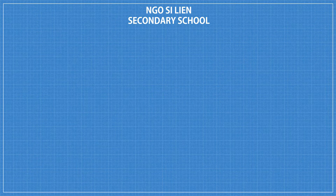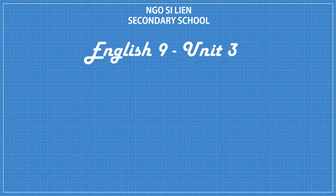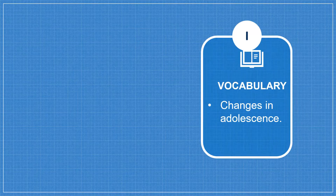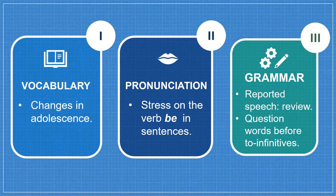Hello everybody. I'm a teacher from Ngo Xilin Secondary School. Today I will introduce you to English language Unit 3: Stress and Pressure. In this lesson we have three main parts: Part 1 — Vocabulary: changes in adolescence; Part 2 — Pronunciation: stress on the verb 'be' in sentences; and Part 3 — Grammar: reported speech, and question words before 'to-infinitives'.